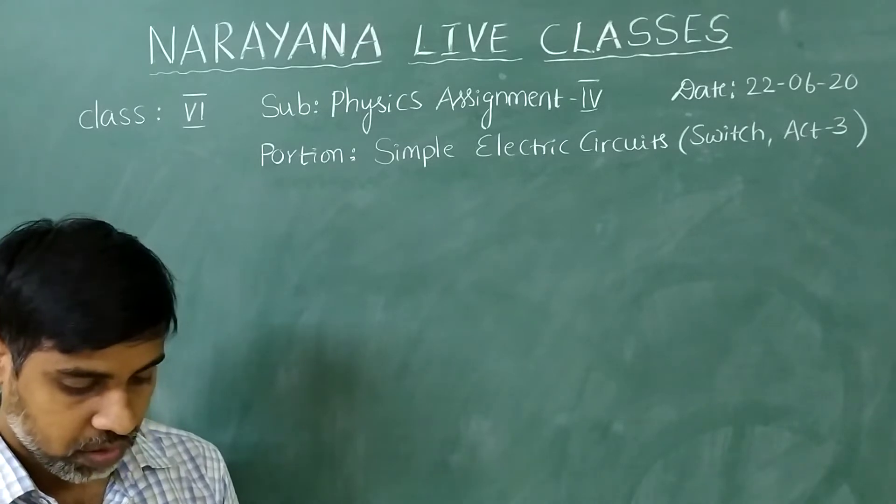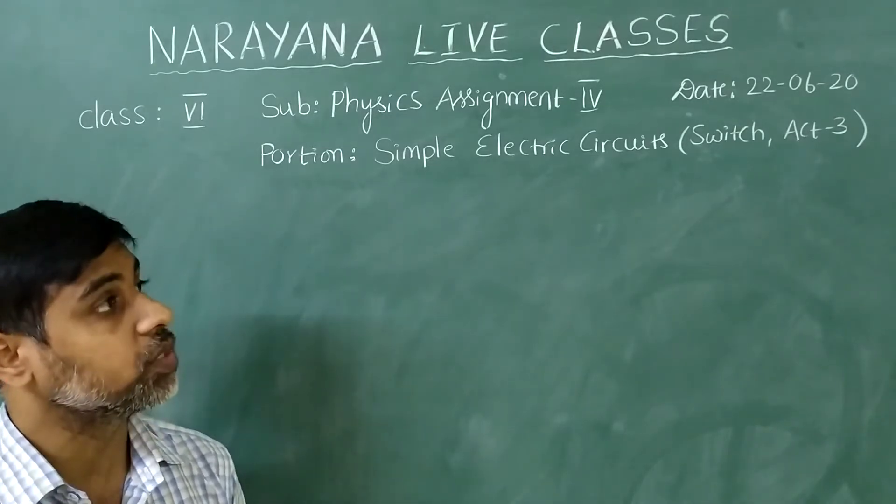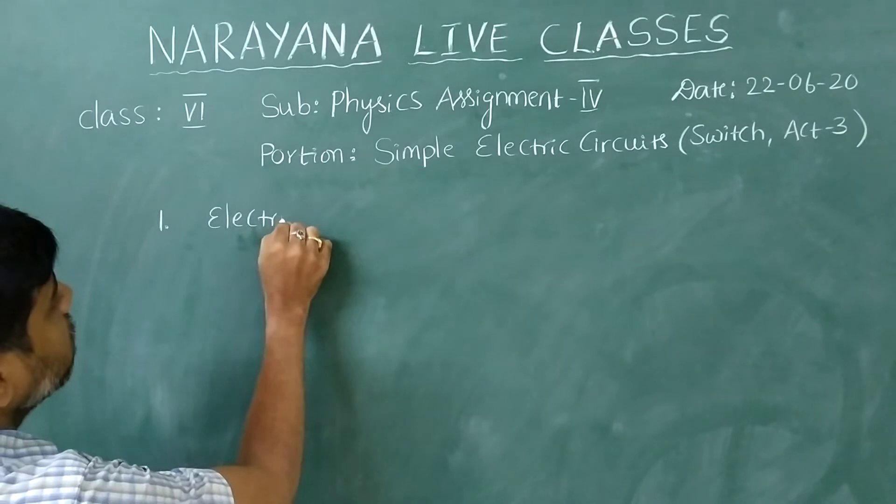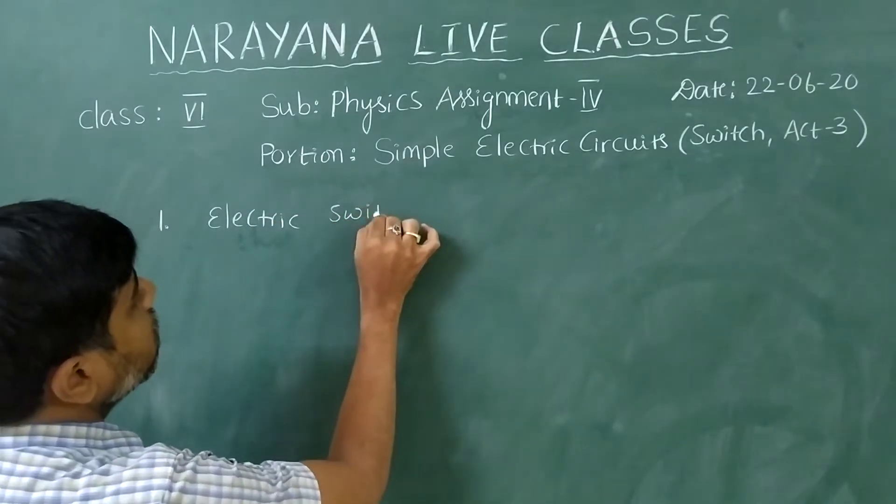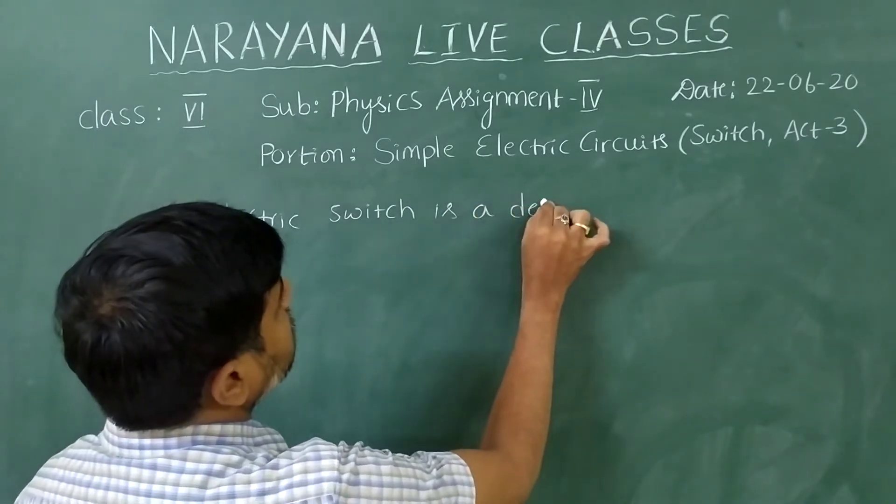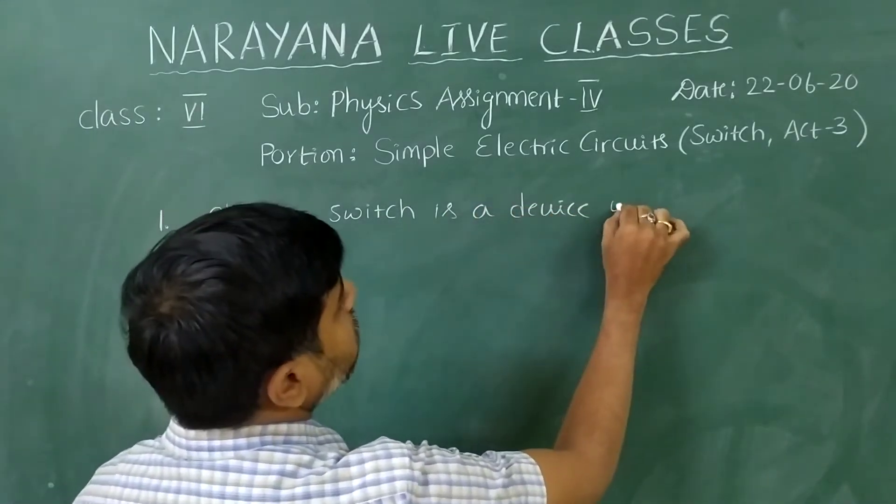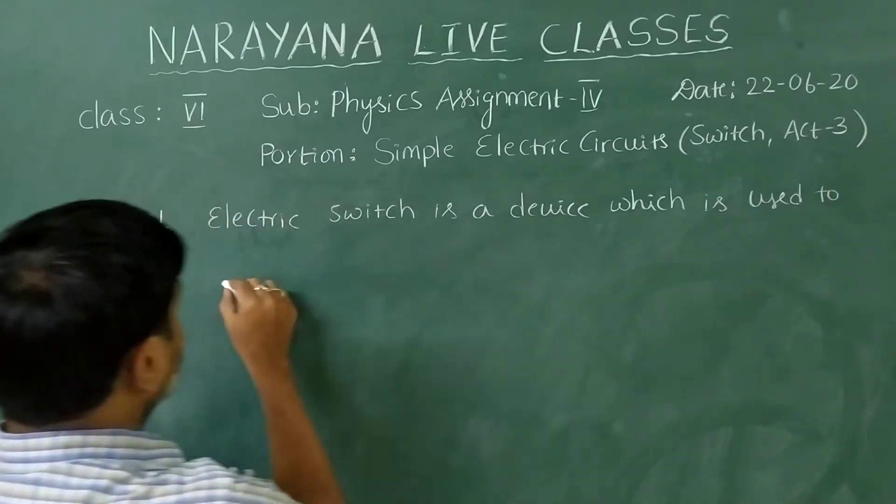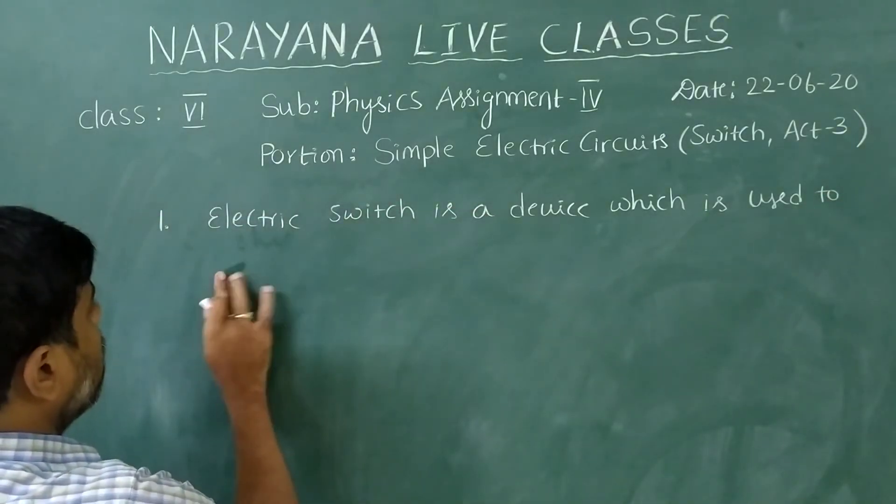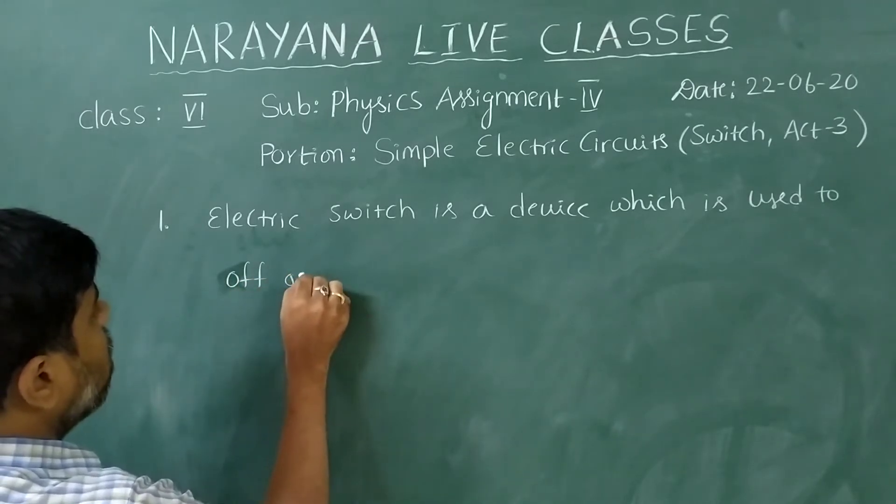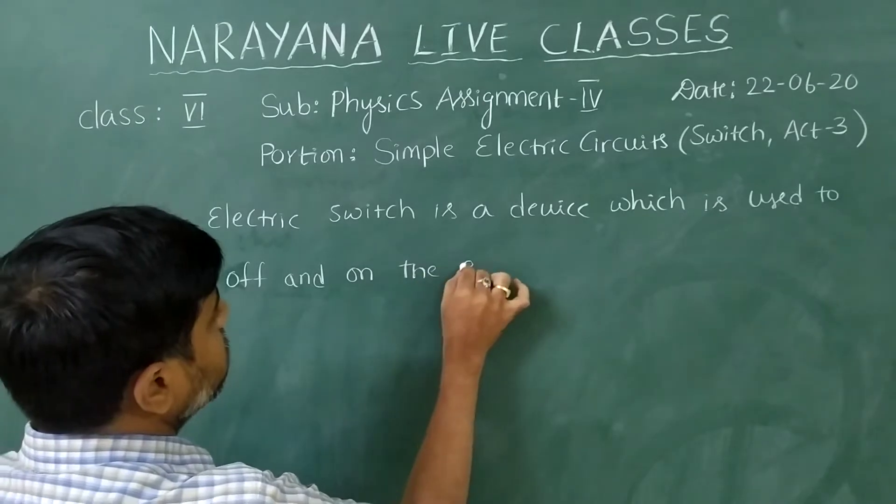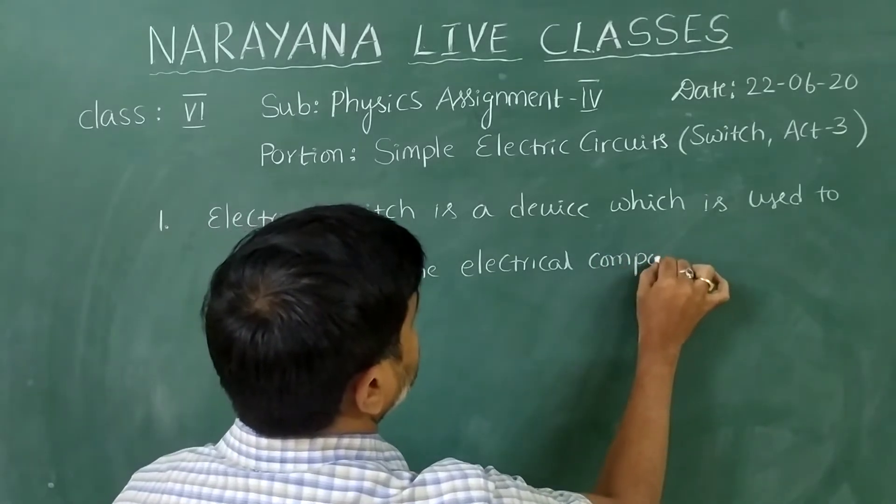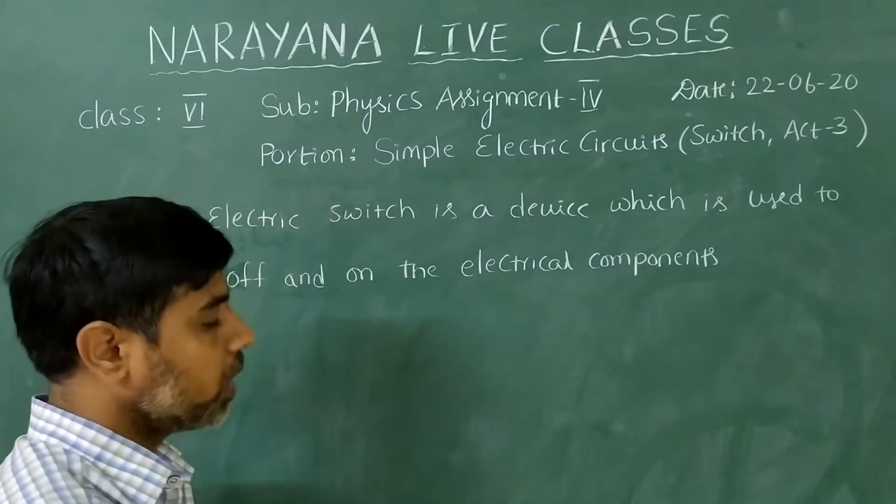What is an electric switch? So the electric switch is a device which is used to switch off and switch on, off and on the electrical components. So this is what an electric switch.